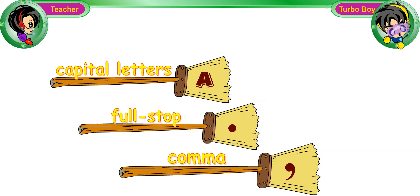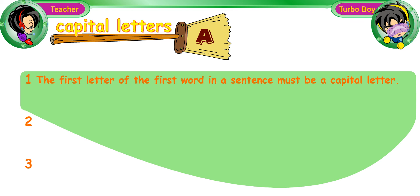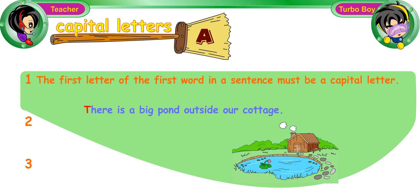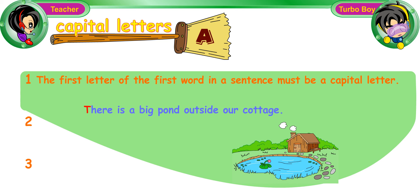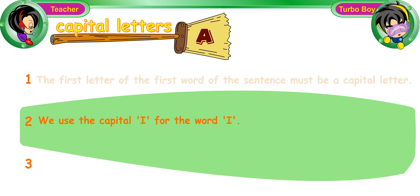There are three uses of capital letters. Firstly, the first letter of the first word in a sentence must be a capital letter. For example, 'There is a big pond outside our cottage.' T is the first letter of the first word in the sentence, so it must be capital T. Secondly, we always use the capital letter I for the word I.